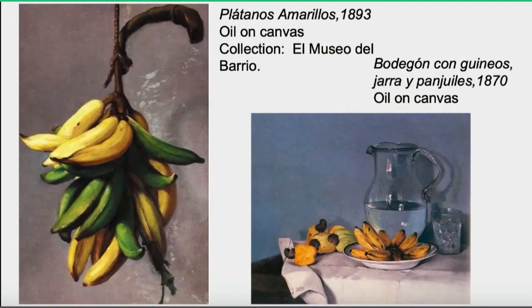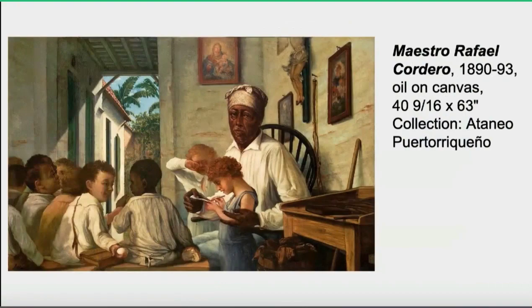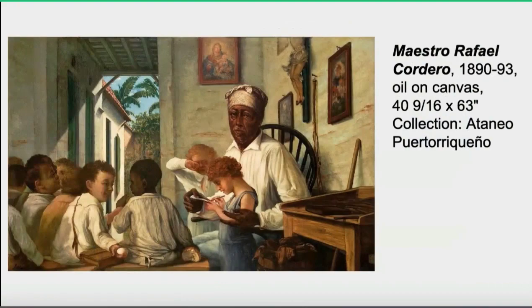He was also deeply interested in the people. We have Rafael Cordero — a teacher who was actually the father of Puerto Rican education, and he was a Black man. Francisco was an abolitionist and really did exalt people of color in his work.